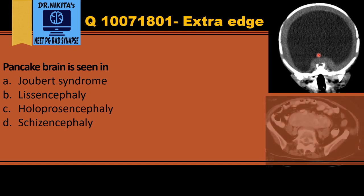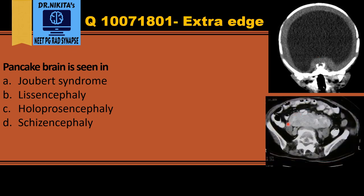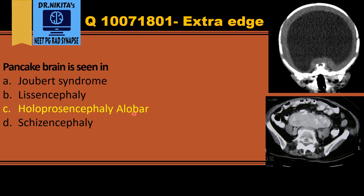Similarly, there is pancake kidney, where the two kidneys are fused both at the upper pole and the lower pole — that is a pancake kidney, a fused kidney. And that's pancake brain — a fused brain seen in holoprosencephaly, specifically the alobar variant where the entire brain is fused.